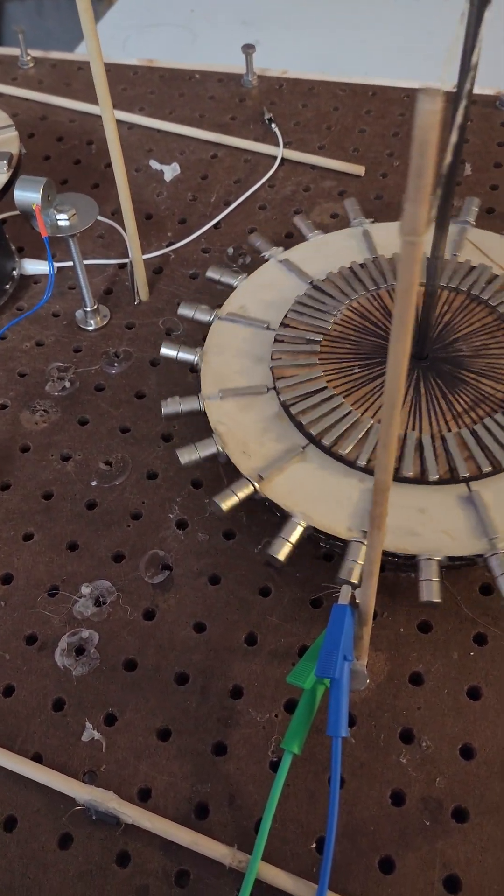As long as that reed switch is working, it should continue to move. And then you can have one of these discs like attached to the wheel of your car, so it could be a hybrid of sorts.